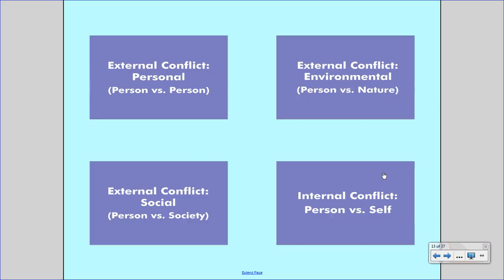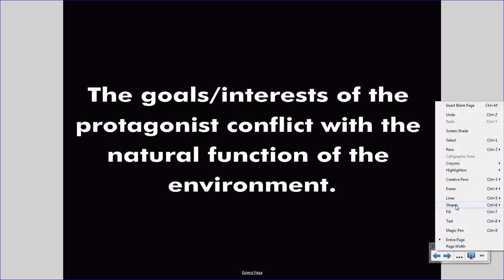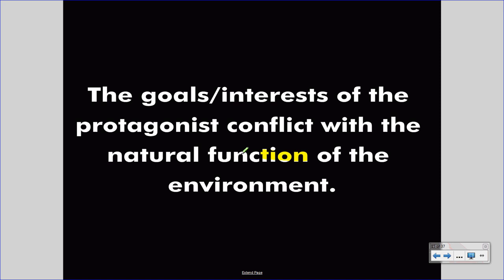In a person versus nature conflict, the goals or interests of the protagonist conflict with the natural function of the environment. The natural function of the environment could be gravity associated with bodies, heat, or a weather pattern. We must always look at what is naturally inherent in the environment, and often that's fairly simple, like a snowstorm or a tornado.